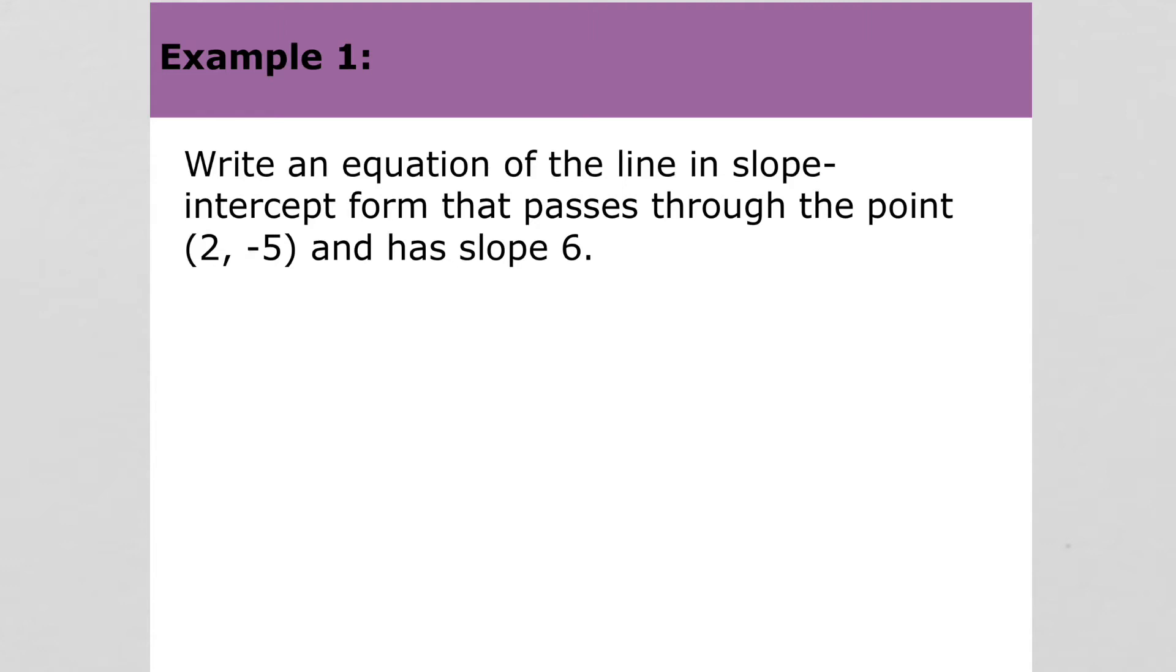So with point slope form, we have y minus the y value of our point equals the slope times x minus the x value of our point. Rewriting this, we get y plus 5 equals 6 times x minus 2.